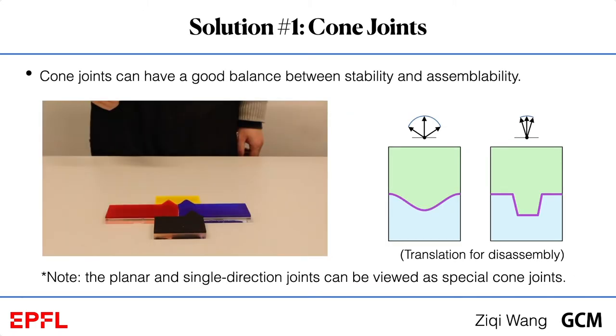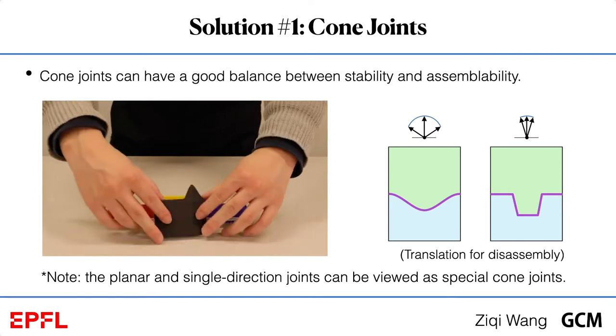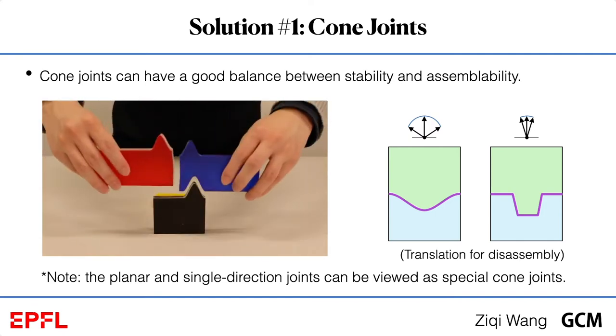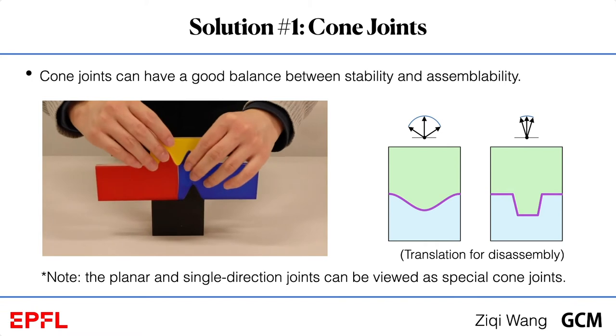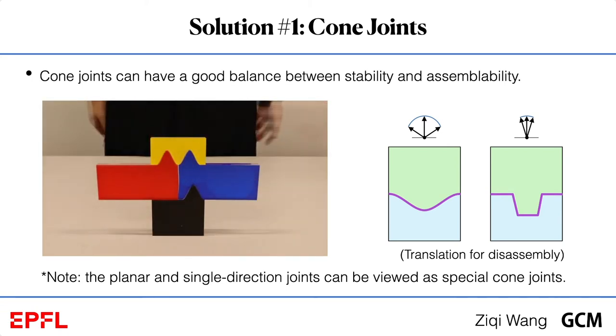Thus, we propose to use cone joints, which interpolate between planar and single direction joints, such that this four-part assembly can have a good balance between stability and assemblability. Please note that planar and single direction joints are special cases of cone joints.